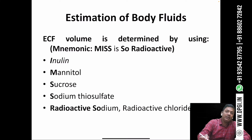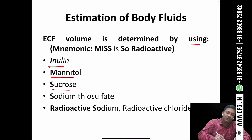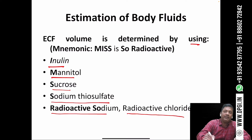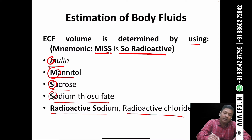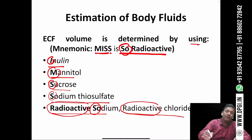The ECF is estimated using inulin, mannitol, sucrose, sodium thiosulfate, radioactive sodium, and radioactive chloride. A mnemonic to remember this is 'MISS is SO radioactive': M for mannitol, I for inulin, S for sucrose, S for sodium thiosulfate, SO for radioactive sodium and radioactive chloride.